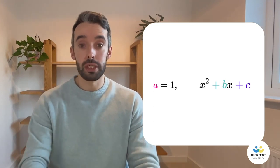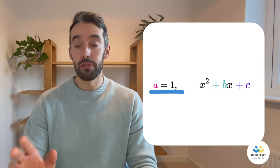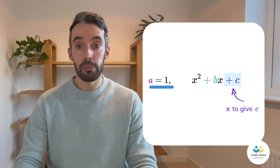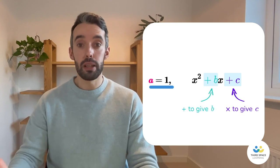Let's start by factorising the quadratic in the form ax squared plus bx plus c when a is 1. All we have to do here is find two numbers that multiply to give the end number, c, and add to give the middle number, b.